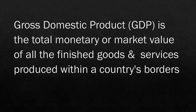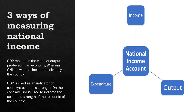The most important measure — the one we hear all the time and obsess about — is GDP: the total monetary or market value of all finished goods and services produced within a country's borders over a particular time frame. It's basically how much a country makes. National income is measured in three ways: income, output, or expenditure. As a note, GDP is used as an indicator of a country's economic strength, whereas GNI shows the total income received by a country and is used to indicate the economic strength of the residents of that country.